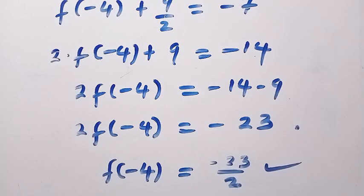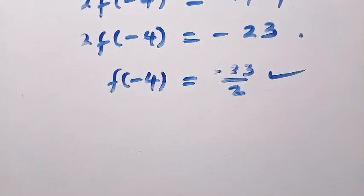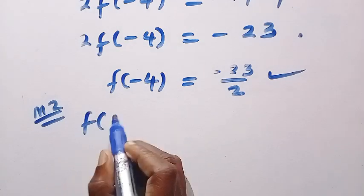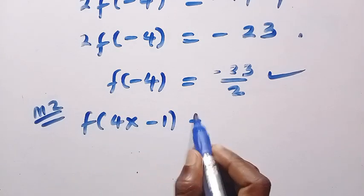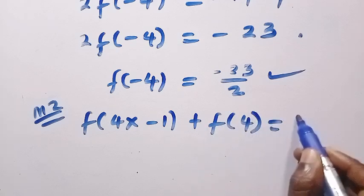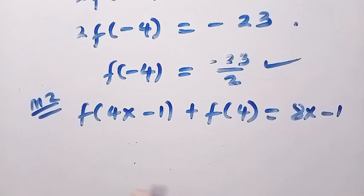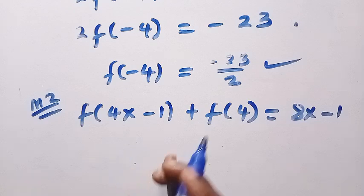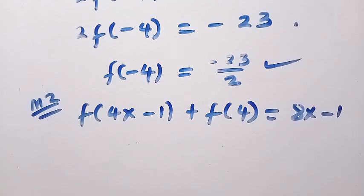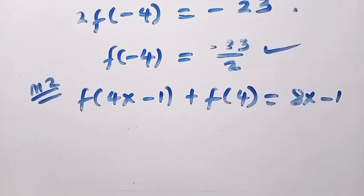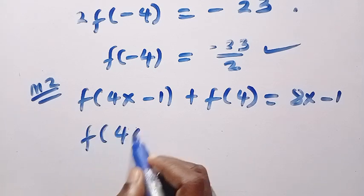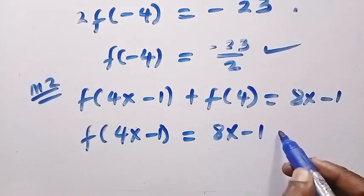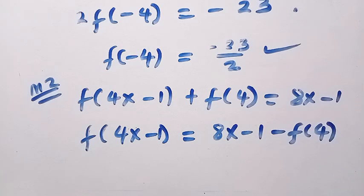We can still solve this in another beautiful way. Consider this as Method 2. If we have f of 4x minus 1 plus f of 4 equals 8x minus 1, and we want to find f of minus 4, suppose I let 4x minus 1 equal to t. We can rearrange to get f of 4x minus 1 equals 8x minus 1 minus f of 4.